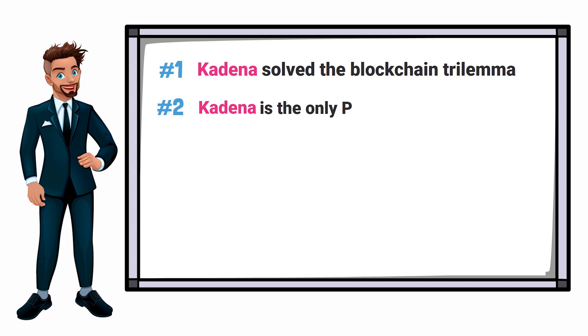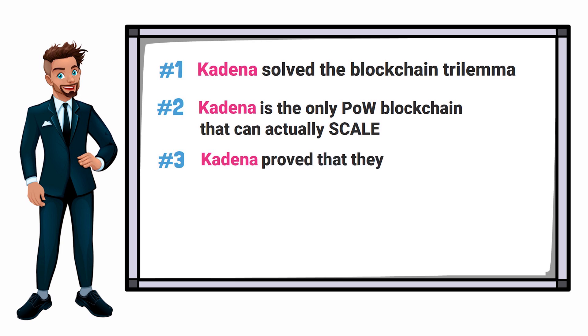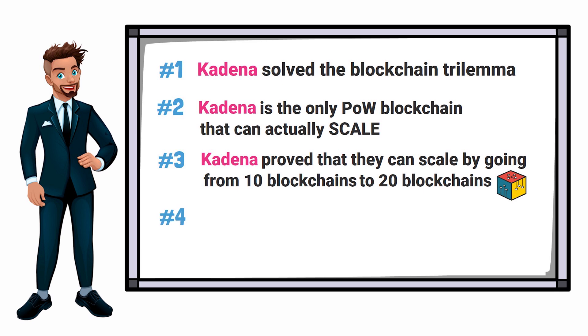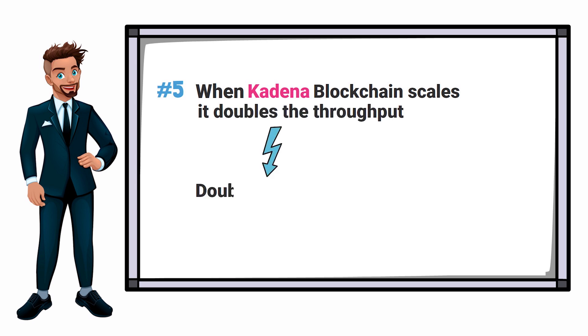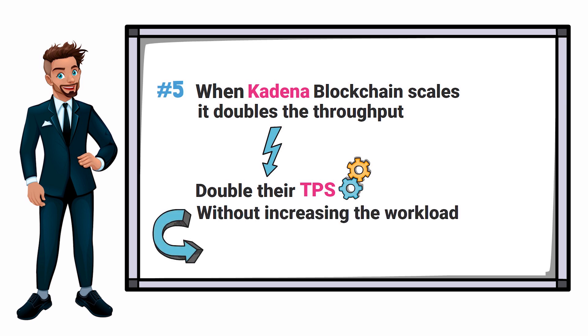So let's recap what we just learned about Kadena: Number one, Kadena solved the blockchain trilemma. Number two, Kadena is the only proof of work blockchain that can actually scale. Number three, Kadena proved that they can scale by going from 10 blockchains to 20 blockchains on mainnet. Number four, when Kadena's blockchain scales up in chains, the blockchain becomes more secure. And last but not least, number five, when Kadena blockchain scales, it doubles its throughput, meaning it doubles their TPS, and it does this without increasing the workload, meaning that it doesn't use any additional power.